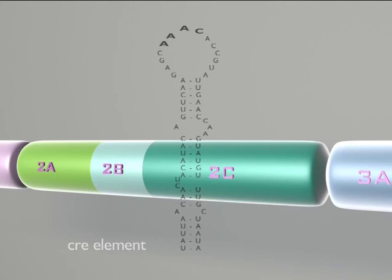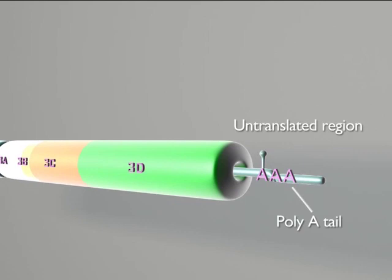Finally, at the 3' end of the genome, we find another untranslated region, and at its 3' end, a poly-A tail.